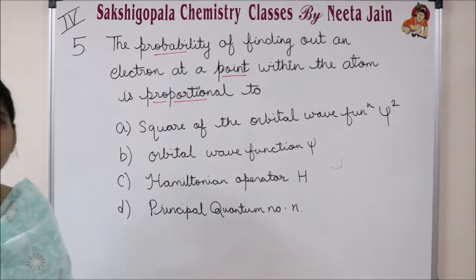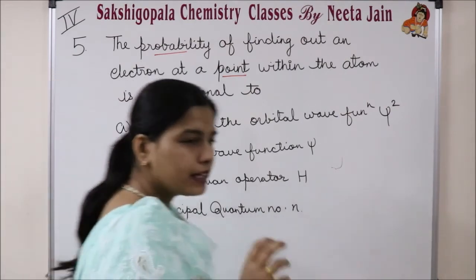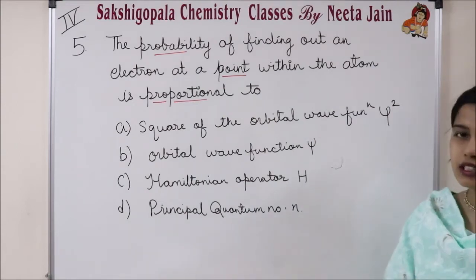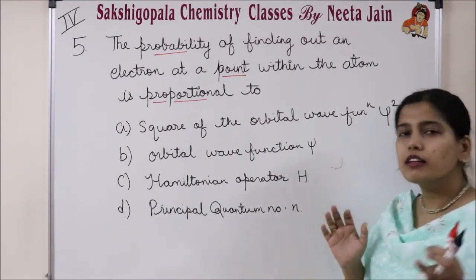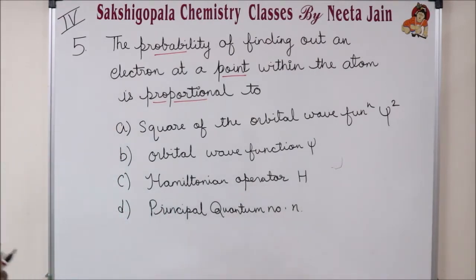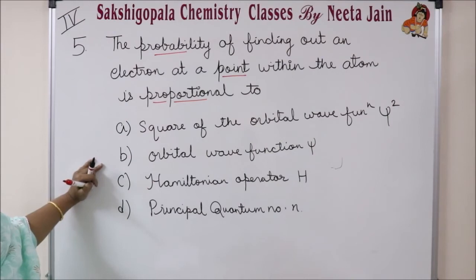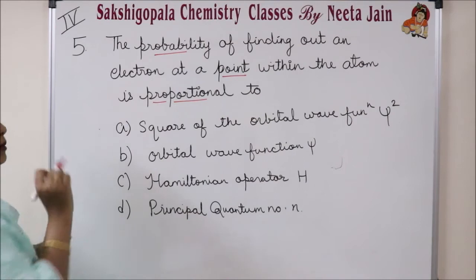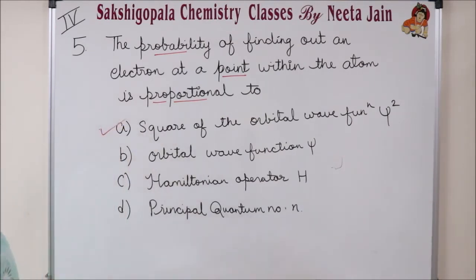Question number 5: the probability of finding an electron at a point within the atom is proportional to the square of the orbital wave function. The correct answer is the square of the orbital wave function, that is psi squared.